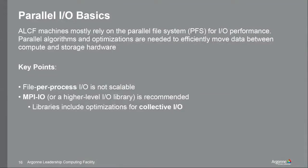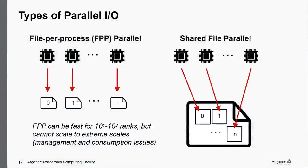Some parallel IO basics: don't use file-per-process unless you're really not running on a big system. It's best to use MPI-IO or some higher-level library leveraging MPI-IO. File-per-process means each MPI rank interacts with its own dedicated file. This can be fine when you have tens or hundreds of files, but it doesn't scale and leads to a lot of consumption and management issues — after the fact, you need to manage all those files and collect all that information.